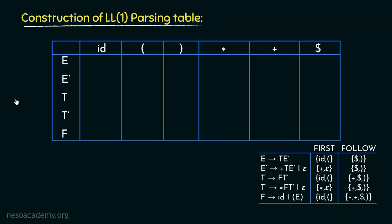Before we get into the full construction of the Parsing Table, let's understand why we are creating it. LL1 Parsers are Predictive Parsers. Whenever a non-terminal symbol is in the stack, the parser looks ahead one terminal symbol from the input stream and predicts which production rule to follow in order to generate the parse tree. The firsts and follow sets help us determine which production rules to place under which column of a specific row.